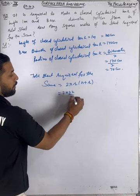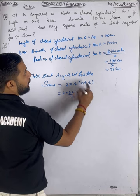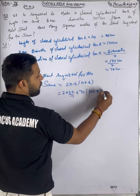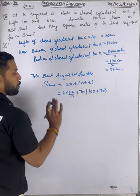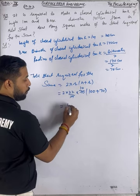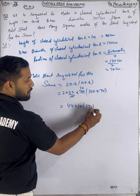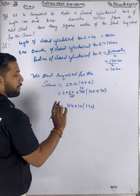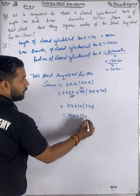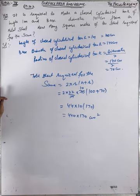Total surface area = 2 × (22/7) × 70 × (100 + 70). Radius is 70, height is 100. So (100 + 70) = 170. The 7 and 70 cancel to give 10, so we get 2 × 22 × 10 × 170 = 44 × 170 cm².